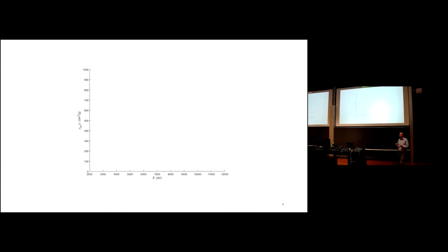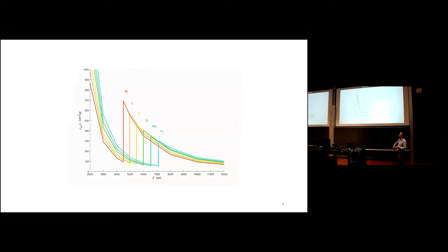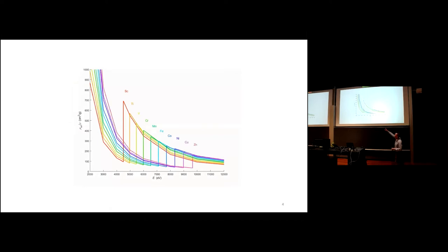How does that work? Well, XAS exploits the fact that every element of the periodic table has a specific energy at which a huge increase in the absorption of X-rays occurs. As we move throughout the transition elements in the periodic table, you can see that each element has a specific energy at which there is a distinct increase in absorption. Here we have the absorption on the Y-axis and the energy of the X-rays that hit a sample of a certain element.